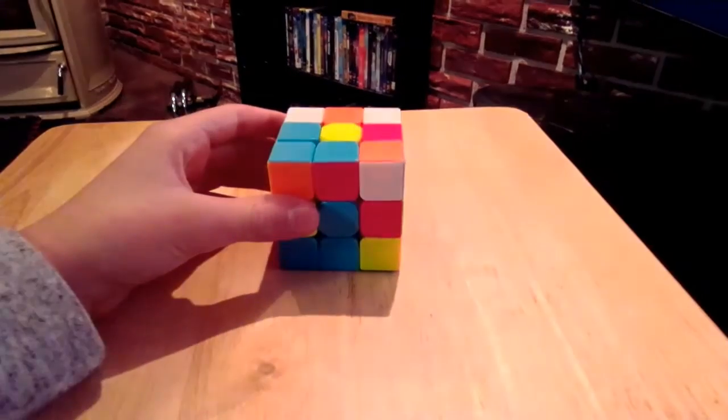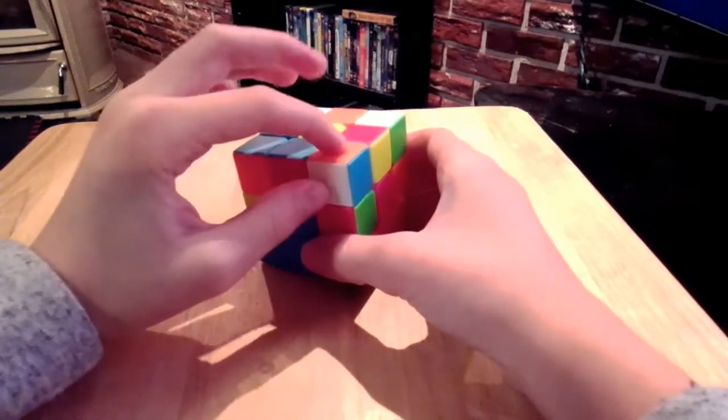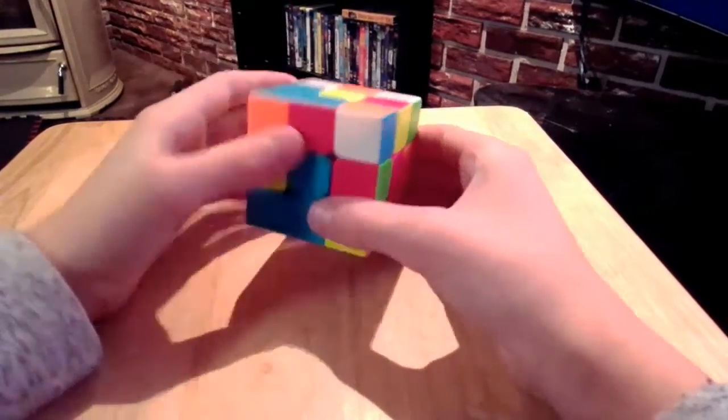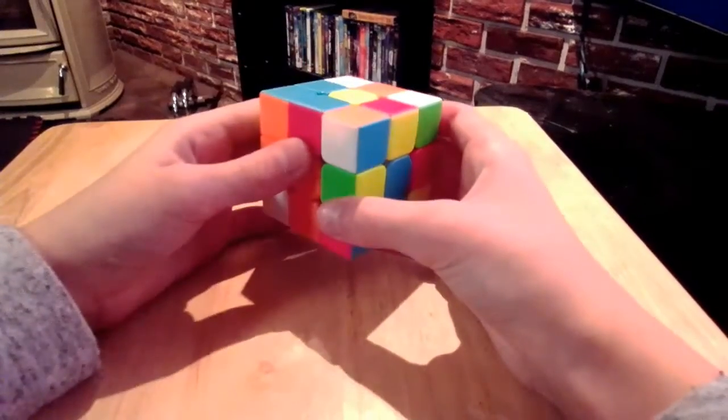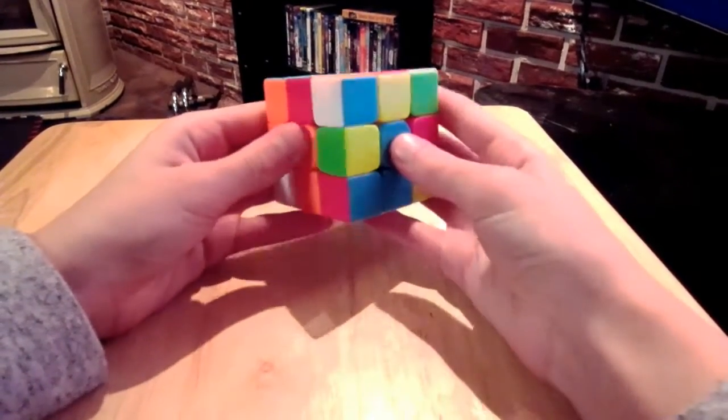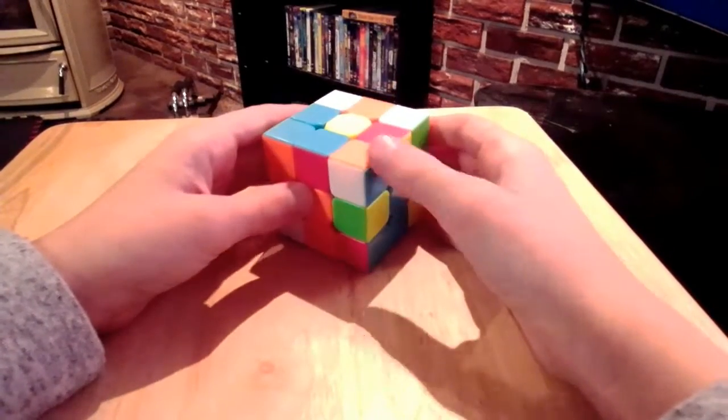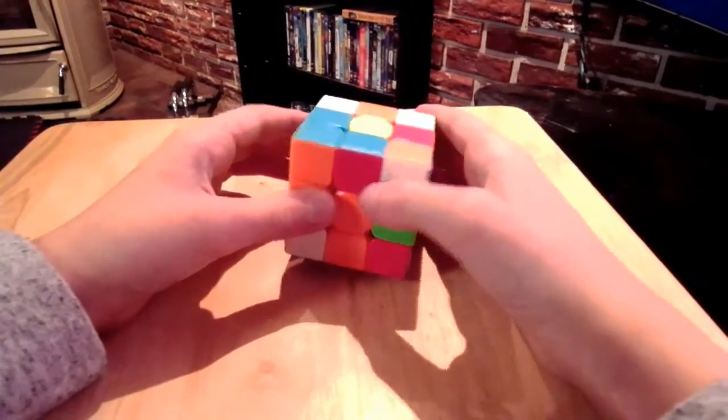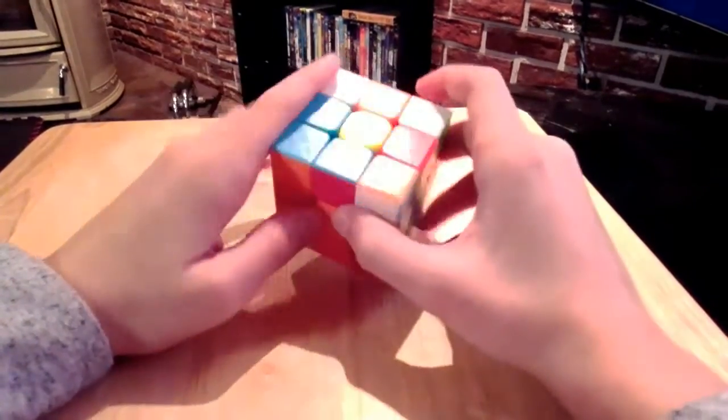Basically, what you want to do is find a corner. I am going to start out, if you want to follow along, with the orange and blue corner. You want to put that in between the orange and blue sides. Then, make sure that the orange and blue corner, and make sure it's the white one, and the orange and blue edge are both in the top layer.